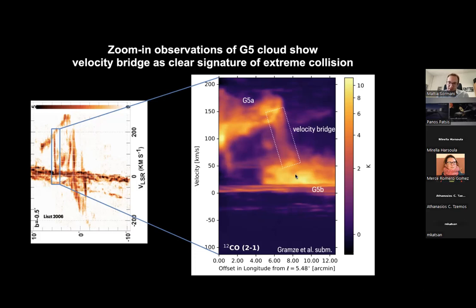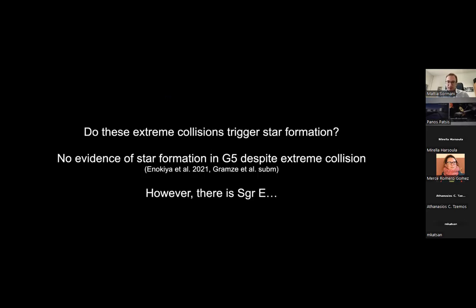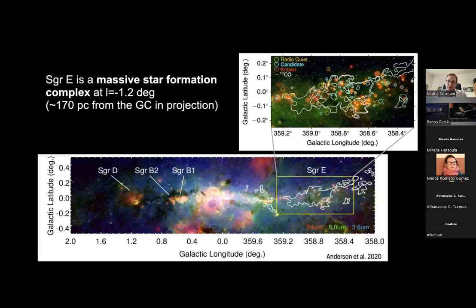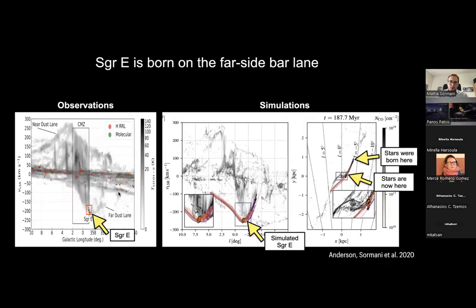An obvious natural question is whether these extreme collisions trigger star formation. As far as we know, there is no evidence of star formation in G5 or any other of these extended velocity features — which is puzzling. However, we have Sagittarius E: a massive star formation complex at the edge of the central molecular zone, at 1.2 degrees from the center and 170 parsecs in projection. It has many H II regions at very high line-of-sight velocities — about minus 200 km/s — unlike all other known H II regions.